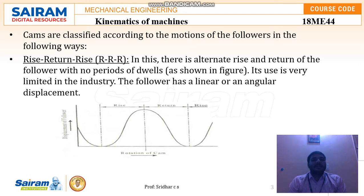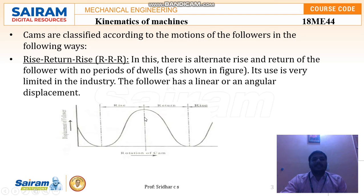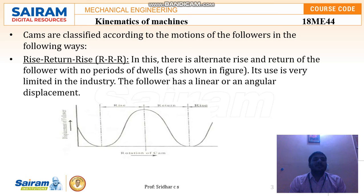In the Rise-Return-Rise pattern, initially the follower rises, then returns, then rises again, then returns again — the cycle repeats continuously with no periods of dwell or rest. This type of motion is very limited in industries. The follower has no linear or angular displacement at a stationary position; it is always in motion.